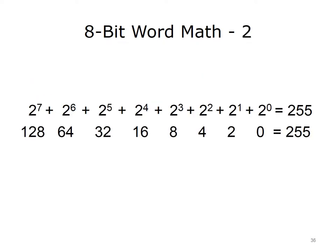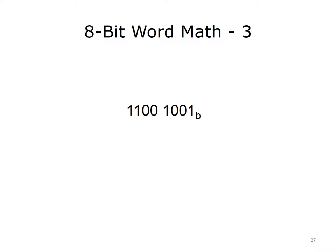This can be proven by doing the math: 2 to the 7th power (128), plus 2 to the 6th power (64), plus 2 to the 5th power (32), plus 2 to the 4th power (16), plus 2 to the 3rd power (8), plus 2 to the 2nd power (4), plus 2 to the 1st power (2), plus 2 to the zero power (1), adds up to the decimal equivalent of 255. Consider another example in which the binary value is 11001001b, an 8-bit word. Pause the presentation and calculate its decimal equivalent. It is worthwhile to take a moment to calculate the result.